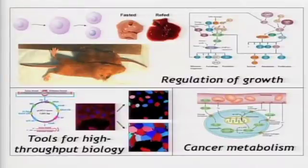We've really been interested in three areas. One is the regulation of growth, mostly through the TOR pathway. We've also done a lot of technology development, largely in RNAi libraries. And much more recently we've also become interested in cancer metabolism, largely because of the realization that the TOR pathway is a major sensor of metabolites and nutrients and also a major regulator of metabolism. I'll tell you two stories: one on amino acid sensing by the TOR pathway, and another on amino acid metabolism in the cancer metabolism field.